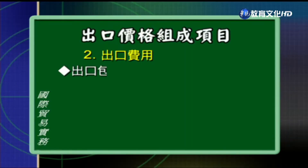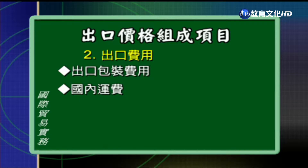出口价格组成的第二个项目就是出口费用，项目非常的多。像是出口包装的费用，因为出口货物必须要经过长途的跋涉还有多次的搬运，所以需要比较坚固的包装。第二项呢就是国内的运费，它是指把货物运到出口地的码头、货柜厂、货柜集散站这些地方所需要的内陆运费，比如说卡车费、拖车费。